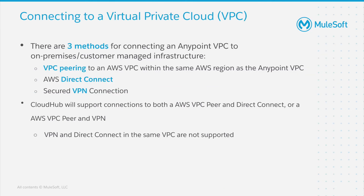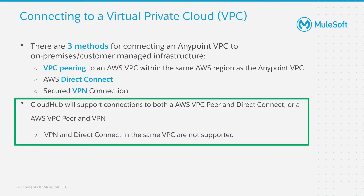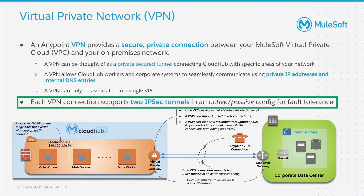So once you have a VPC, you may wish to connect to private resources that are in your AWS environment, another cloud provider, or your data center. CloudHub supports three ways for connecting: VPC peering to an AWS VPC that's within the same region as the Anypoint VPC, AWS Direct Connect, or a secured VPN connection. CloudHub supports connections to both an AWS VPC peer and Direct Connect, or an AWS VPC peer and VPN. One important note is that VPN and Direct Connect inside of the same VPC are not supported. VPN is the most commonly used connectivity method for CloudHub and is used when you need to access resources in your data center such as an ERP system or database that are not externally exposed. It may also be used to connect to resources in other cloud environments like Google Cloud or Azure. VPN creates a secure, usually encrypted connection between your network and CloudHub, and it effectively acts as a private tunnel for communication to specific resources in both environments.